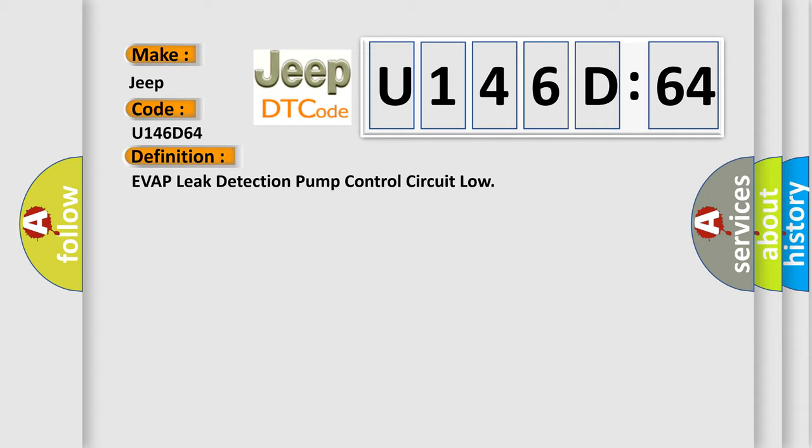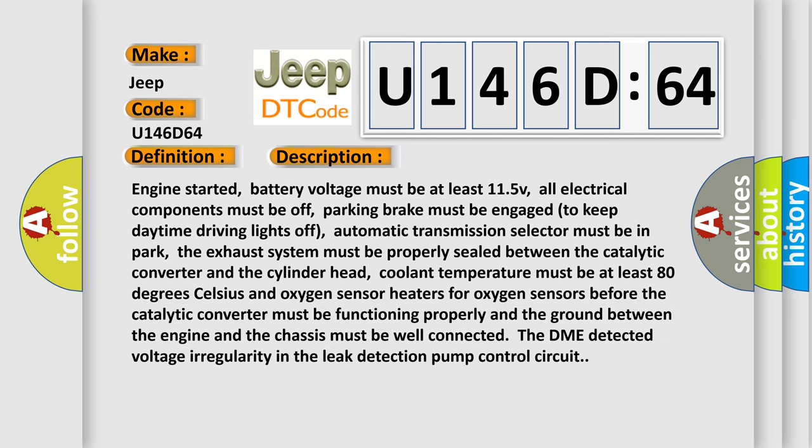Here is a short description of this DTC code. Engine started. Battery voltage must be at least 11.5V. All electrical components must be off. Parking brake must be engaged to keep daytime driving lights off. Automatic transmission selector must be in park. The exhaust system must be properly sealed between the catalytic converter and the cylinder head. Coolant temperature must be at least 80 degrees Celsius, and oxygen sensor heaters for oxygen sensors before the catalytic converter must be functioning properly, and the ground between the engine and the chassis must be well connected. The DME detected voltage irregularity in the leak detection pump control circuit.